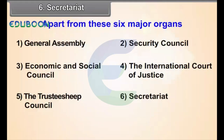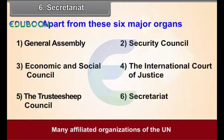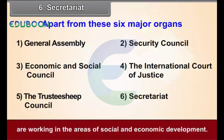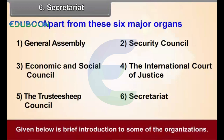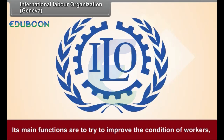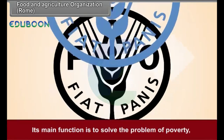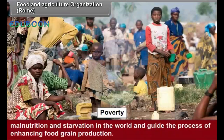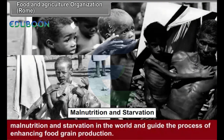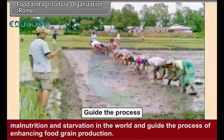Apart from these six major organs, many affiliated organizations of the UN are working in the areas of social and economic development. Given below is a brief introduction to some of the organizations. International Labour Organization (Geneva): Its main function is to try to improve the condition of workers, ensure that they get due wages, and their health is protected. Food and Agricultural Organization (Rome): Its main function is to solve the problem of poverty, malnutrition and starvation in the world, and guide the process of enhancing food grain production.